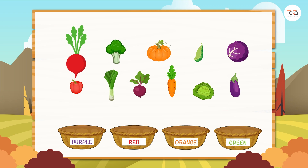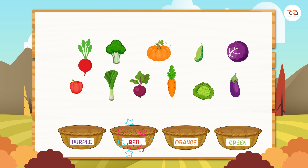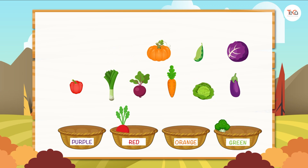This is a radish — it's red. Let's put it into the red group. This is broccoli — it's green. Let's put it into the green group. This is a pumpkin — it's orange. Let's put it into the orange group. A pea — let's put it into the green group. A purple cabbage — of course, put it into the purple group.